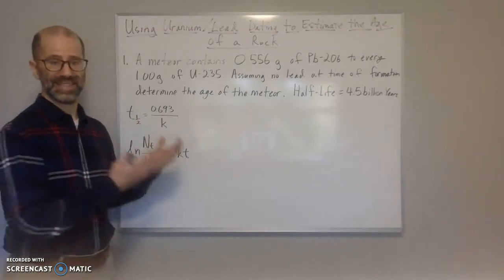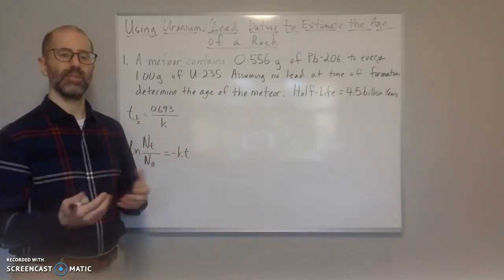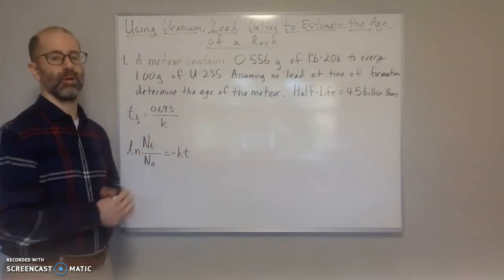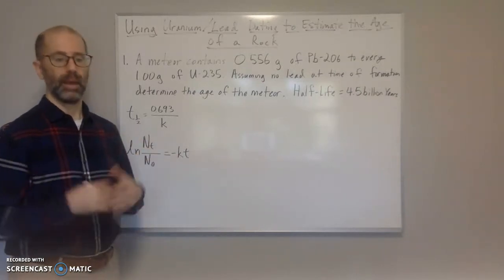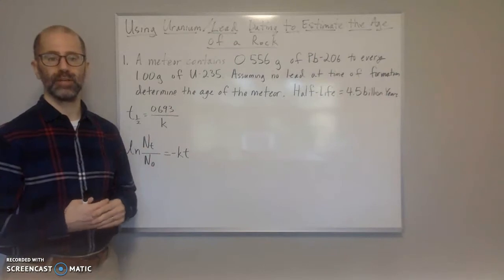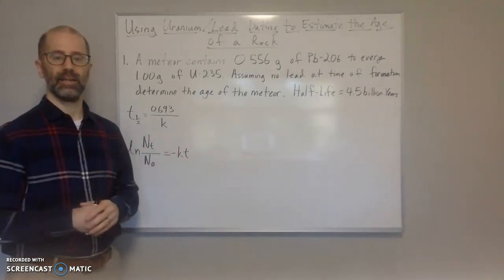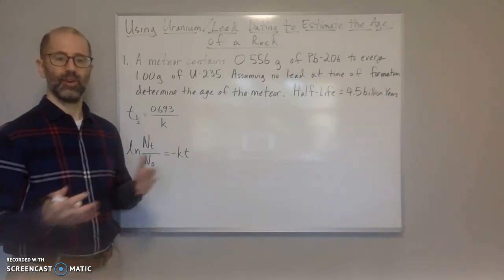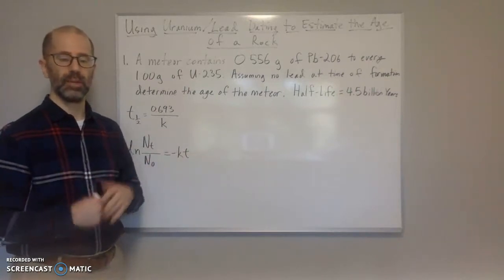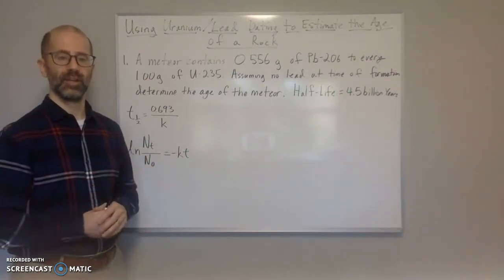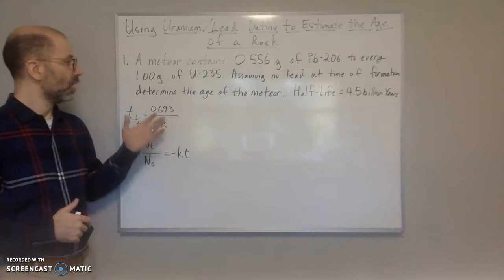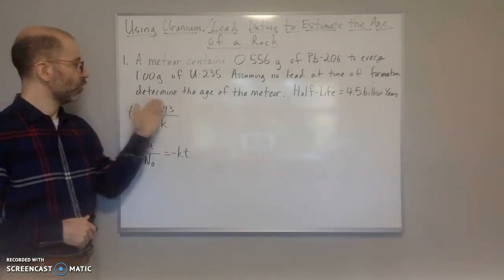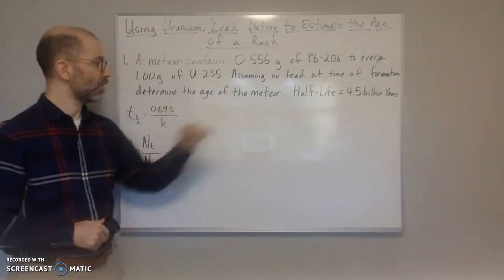That's one of the assumptions in dating methods, is that you had 0 amount of the daughter isotope to begin with. So any daughter isotope, in this case lead, that is found in the object is assumed to actually come from the original uranium. That may or may not be true because of leaching and the movement of isotopes in and out of the environment. But it is a common assumption that's used.